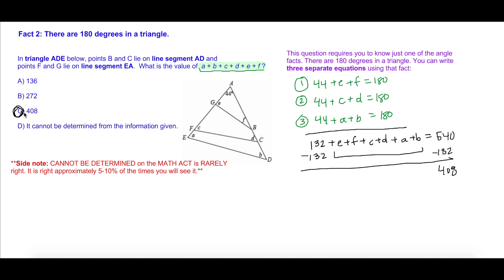Just a little side note here. You will sometimes see on the ACT a choice: 'It cannot be determined from the information given.' I just want to let you know that is rarely right on the ACT. It is only right approximately 5 to 10% of the times you see it. That is slightly more often than my boyfriend Bobby, who is right approximately 3 to 4% of the time.